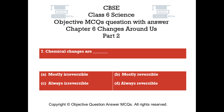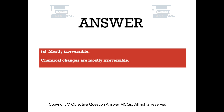Question number 7. Chemical changes are — Option A: mostly irreversible. Option B: mostly reversible. Option C: always irreversible. Option D: always reversible. The right answer is Option A: mostly irreversible. Chemical changes are mostly irreversible.